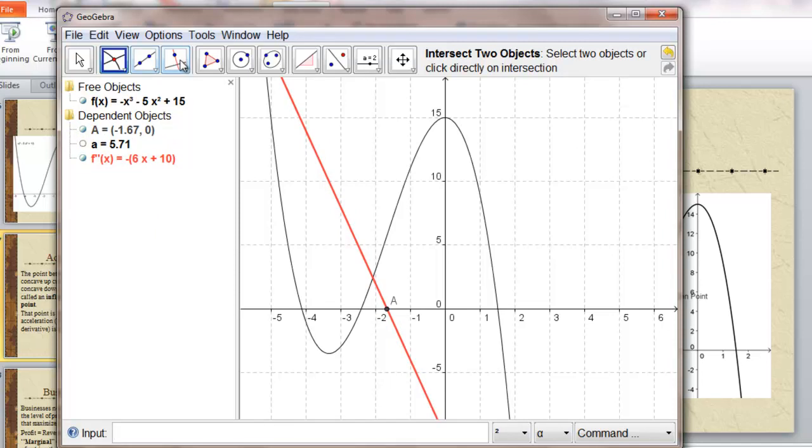You could also use a perpendicular line. At a, perpendicular to the x-axis. Where does that intersect our original function? Negative 1.67, 5.74.